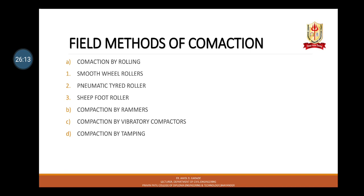The third field method is compaction by vibratory compactor. In a vibratory compactor, vibrations are induced in soil during compaction. The compactors are available in a variety of forms. When a vibratory unit is mounted on a drum, it is called a vibratory roller, available in both pneumatic type and smooth wheel type. In the smooth wheel type, a separate motor drives an arrangement of eccentric weights to create high-frequency, low-amplitude up-and-down oscillation of the drum. Vibratory compactors can compact granular soils to a very high maximum dry density and are suitable for compacting granular soils with no fines in layers up to 1 metre thick.